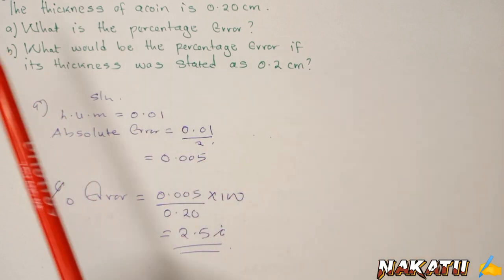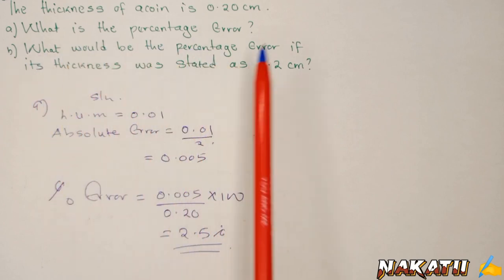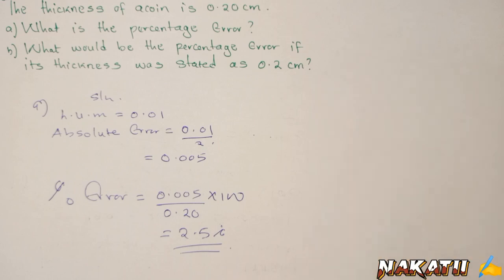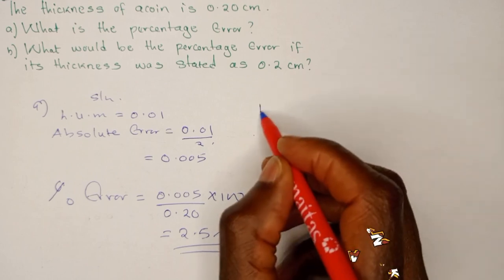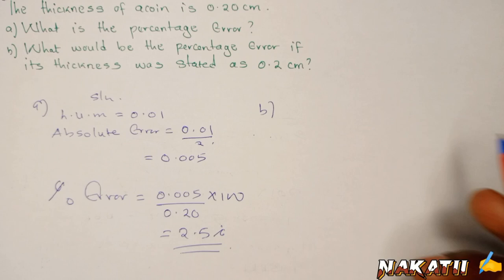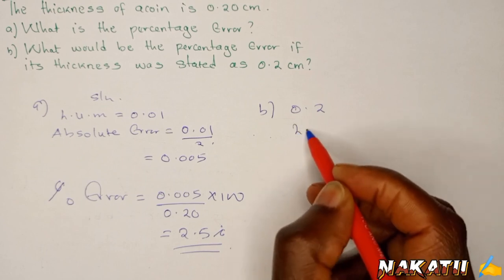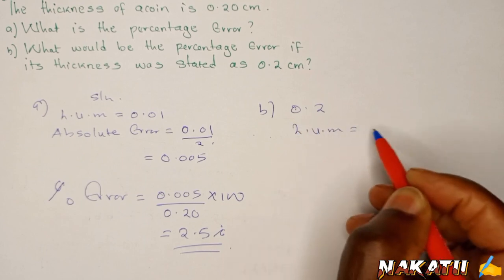Now, part b of the question asks, what will be the percentage error if its thickness was stated as 0.2? When it is 0.2, the least unit of measurement is 0.1.